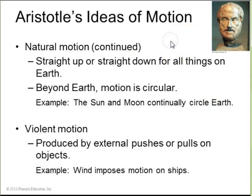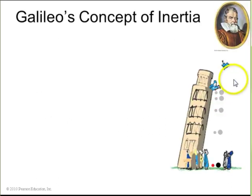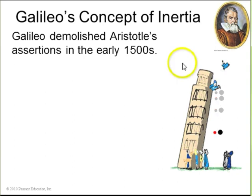This is all Aristotle's ideas and they turn out not to be right, but they're interesting. Violent motion would be produced by external pushes and pulls on objects, like a wind on a ship or somebody shooting an arrow or something that's not natural. So now we move way forward to the 1500s, to Italy and Galileo Galilei.